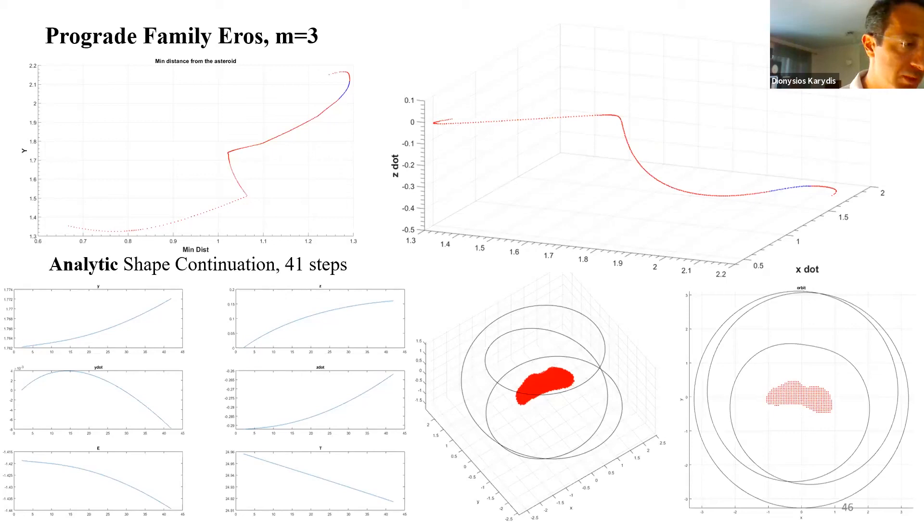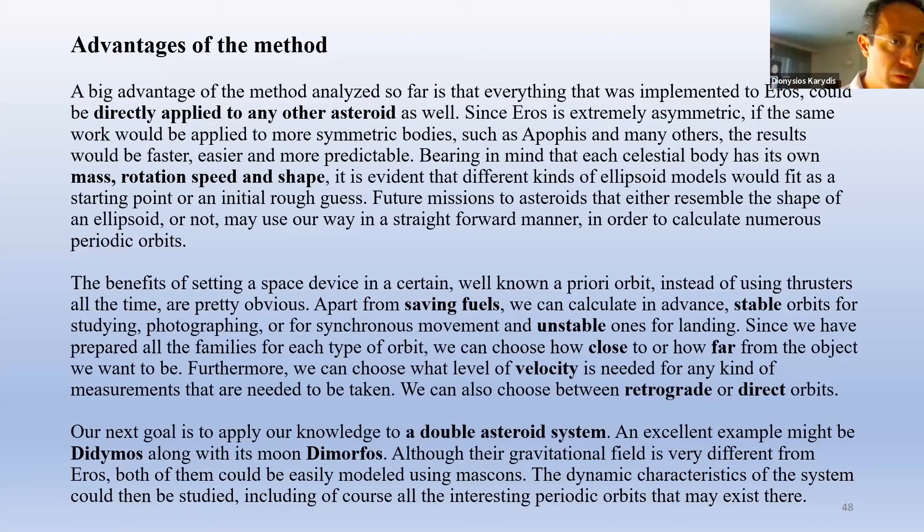So we will conclude with the advantages of our method. First of all, everything that was implemented to Eros could be directly applied to any other asteroid as well. Should the same work be applied to more symmetric bodies such as Apophis and many others, the results would be faster, easier and more predictable. The benefits of setting a space device in a certain well-known a priori orbit instead of using thrusters all the time are pretty obvious. Apart from saving fuels, we can calculate in advance stable orbits for studying, photographing and for synchronous movement and unstable ones for landing. Since we have prepared all the families for each type of orbit, we can choose how close to or how far from the object we want to be. Furthermore, we can choose what level of velocity is needed for any kind of measurements that are needed to be taken. We can also choose from retrograde or direct orbits.